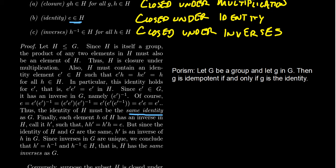The last thing to consider is inverses. Since we now know the identity of H is the same as the identity of G, the inverses will also have to be the same. Since H is a subgroup and a group in its own right, it has inverses. For each element h, let H′ be its inverse in H. Then hH′ = H′h = E — the identity in G. Since inverses are unique, H′ must equal h-inverse, so the subgroup is closed under inverses.